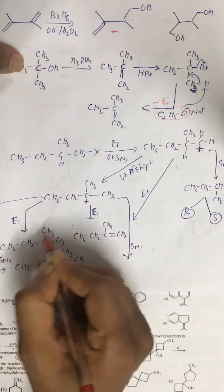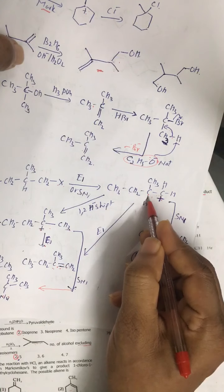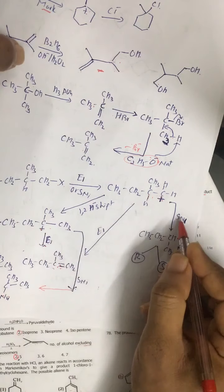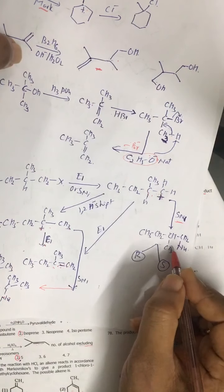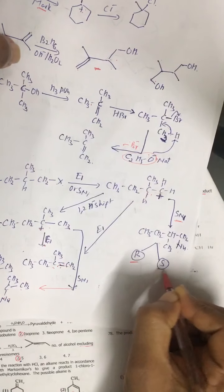From here, if it undergoes SN1 mechanism, the nucleophile attacks on this carbon atom and we get this product. Whereas from the other carbocation, if it undergoes E1 mechanism — elimination — and this hydrogen is removed, we get this kind of alkene. From this carbocation also, we get this alkene. And if this carbocation undergoes SN1 mechanism, we get this kind of product. Now this is optically active, so we get two forms: R and S.